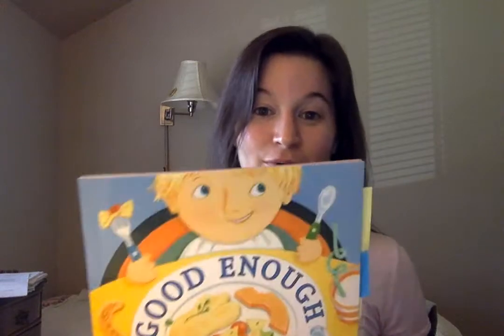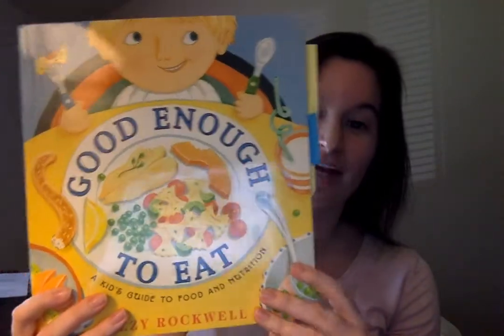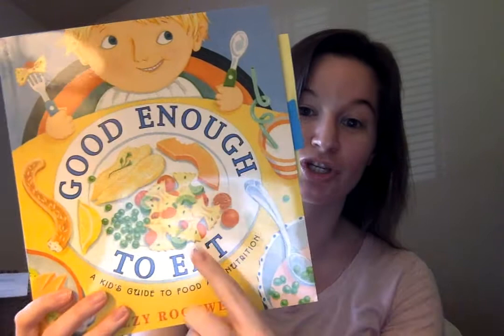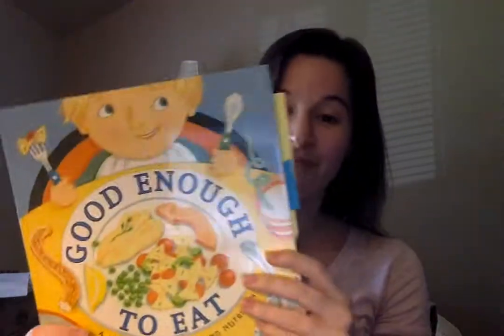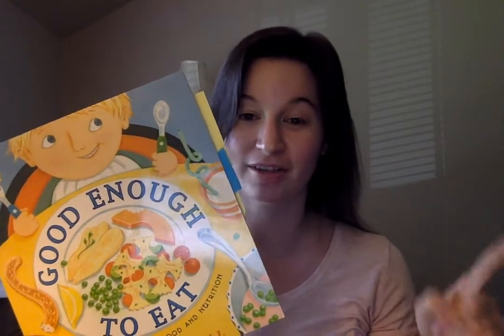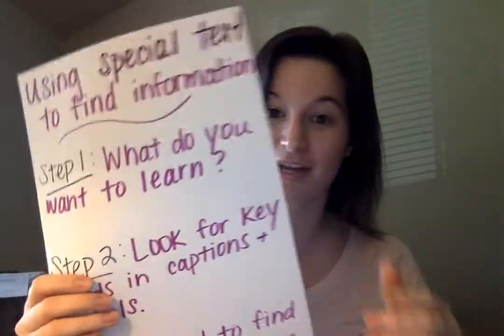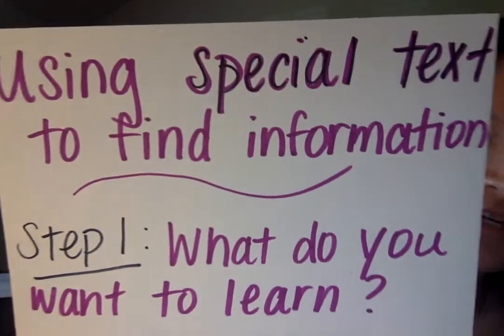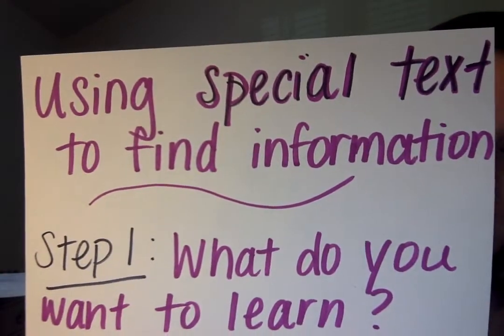Our text that we're working with today is the same text we've been using the last few days, which is Good Enough to Eat. Make sure that if you did not watch the read aloud for this the last couple of days, you are referring to the video above and watching that one so you're all caught up. Our skill today that we're practicing — we haven't practiced in a while, so I'm really excited — is using special text to find information.